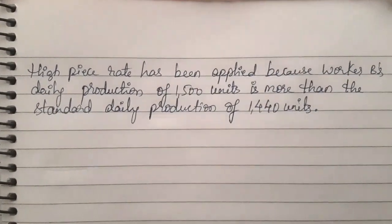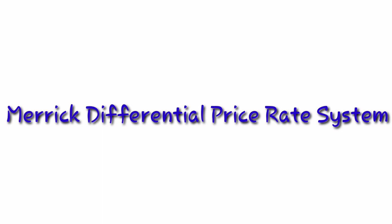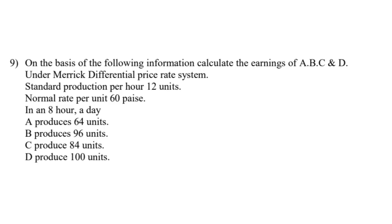Problem number nine: Calculate the earnings of workers A, B, C, and D under the Merrick differential piece rate system. Given: standard production per hour is 12 units, normal rate per unit is 60 paise, and in an eight-hour day, worker A produces 64 units, B produces 96 units, C produces 84 units, and D produces 100 units.